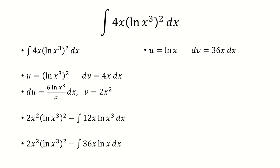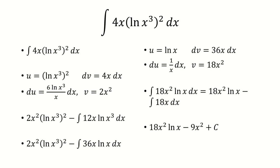u will be ln of x, dv is 36x dx. The derivative of ln of x is 1 over x. The antiderivative of 36x is 18x squared. We multiply uv minus integral vdu. And the antiderivative of 18x is 9x squared. So we end up with 18x squared ln of x minus 9x squared plus c.